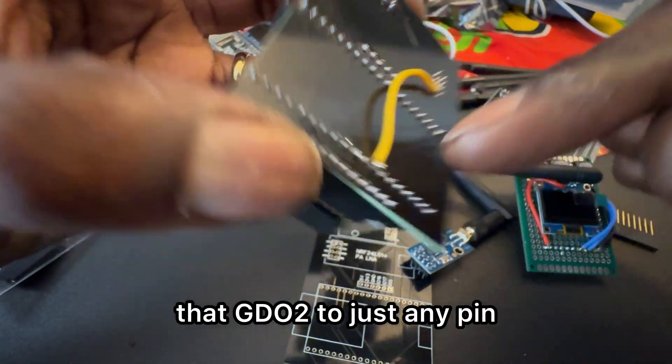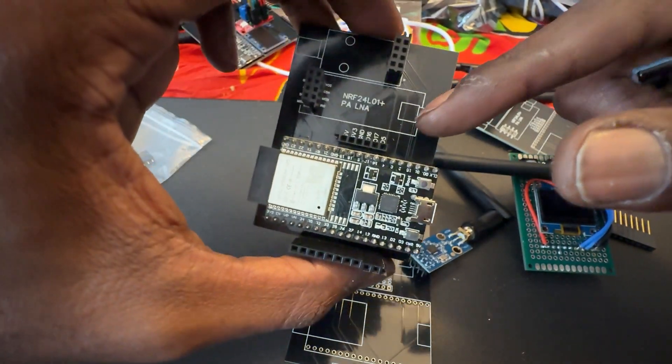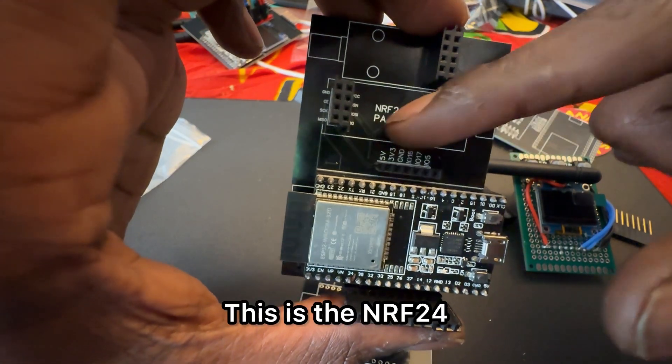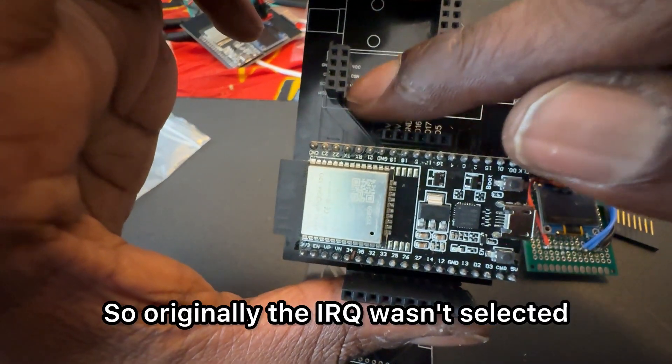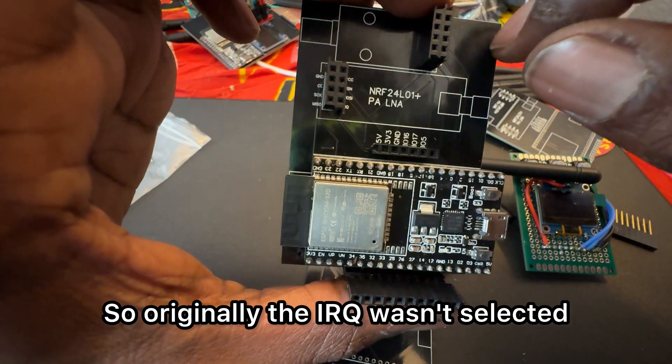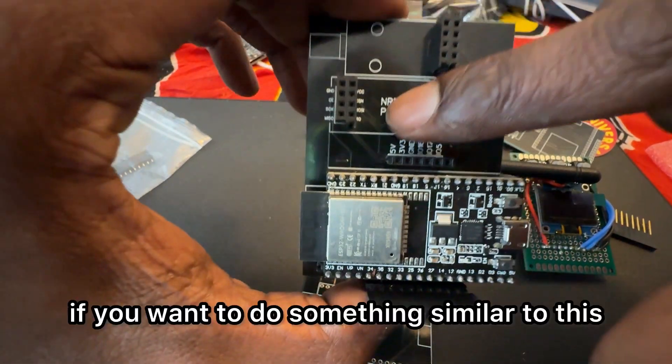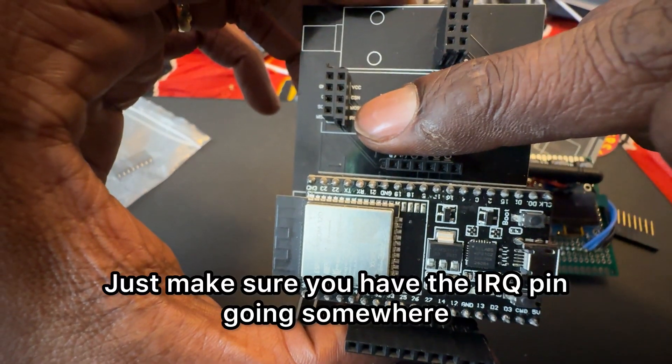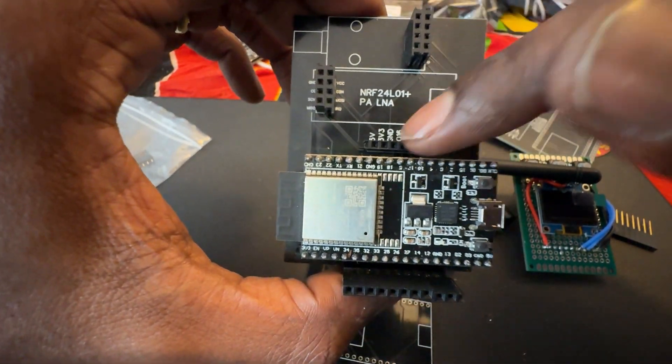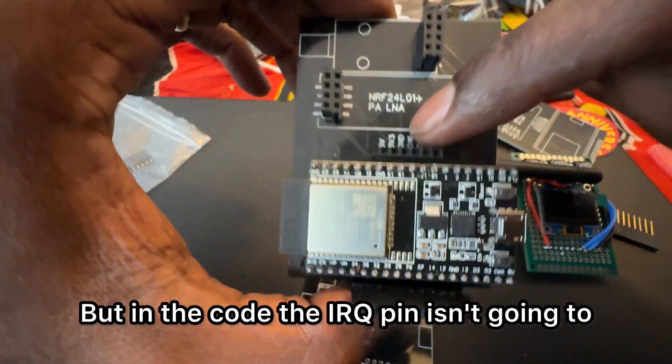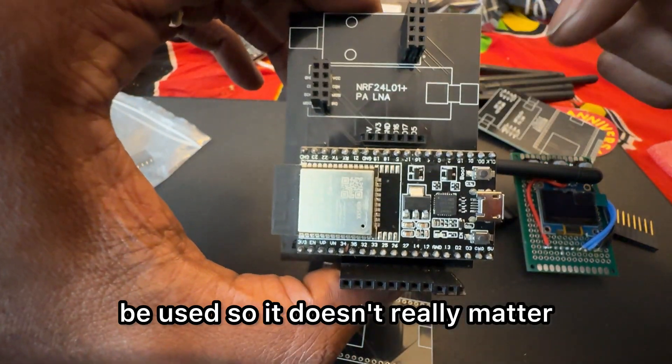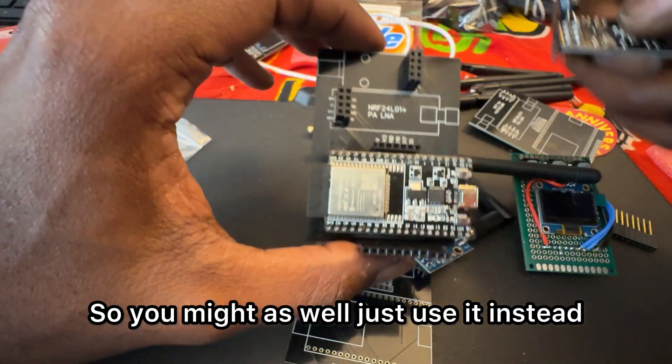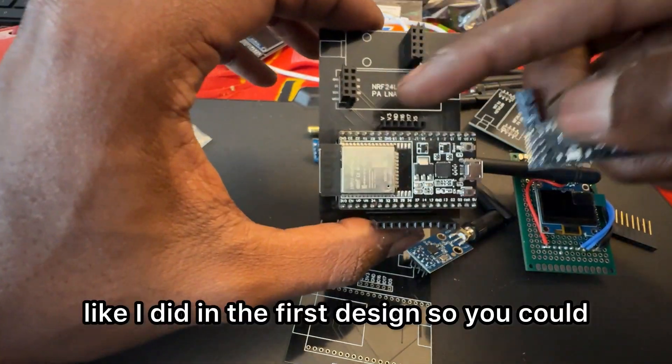Originally this is the NRF24 so the IRQ wasn't selected. For future development, if you want to do something similar to this, just make sure you have the IRQ pin going somewhere. But in the code the IRQ pin isn't going to be used, so it doesn't really matter. You might as well just use it instead of leaving it out like I did in the first design.